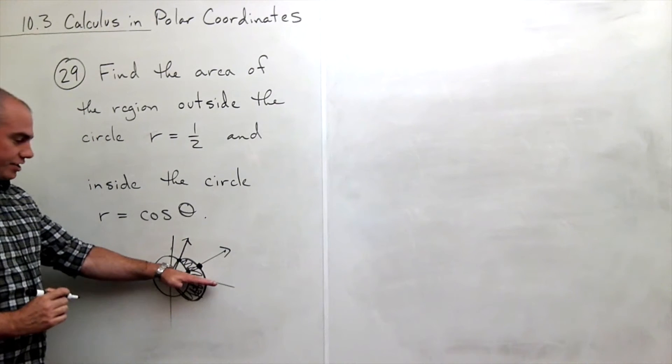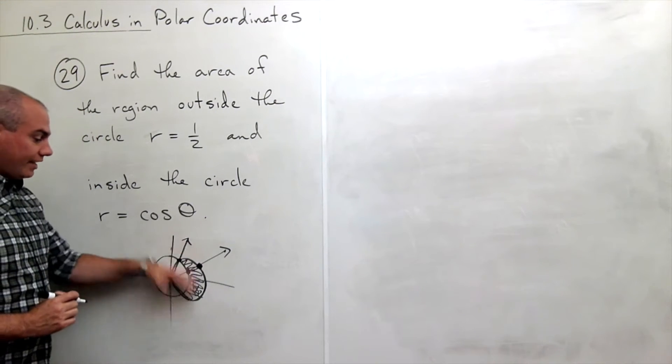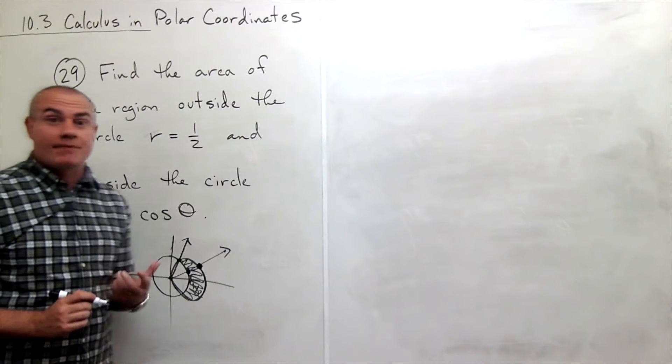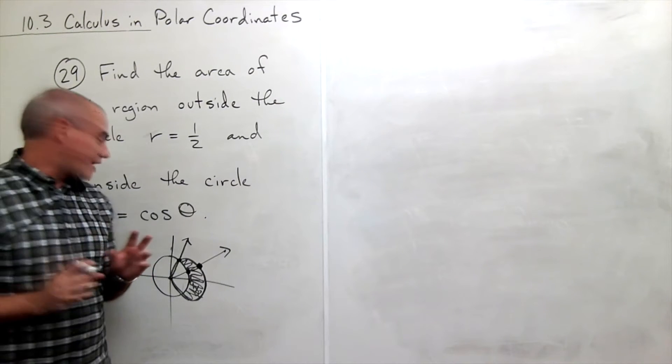then I could just integrate from zero to that angle and then double it because of my symmetry. So why don't I do that?